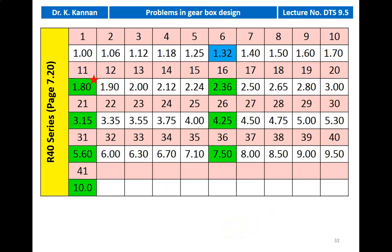The R40 series from page number 7.2 of the PSG design data book is shown. The progression ratio values increase as: 1, 1.06, 1.12, 1.18, 1.25, 1.32. So 1.32 is R40 by 6.